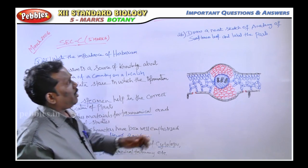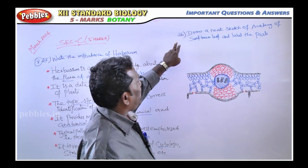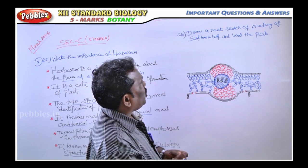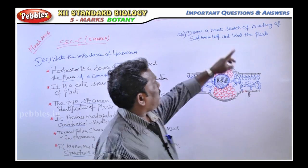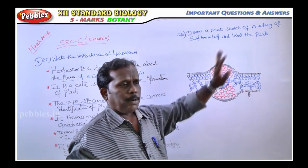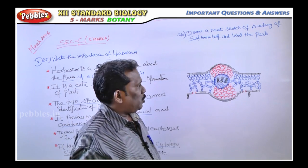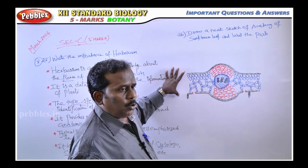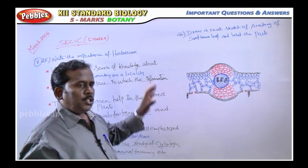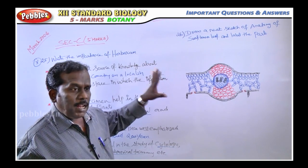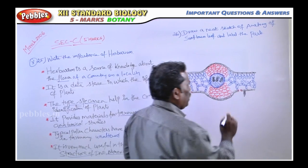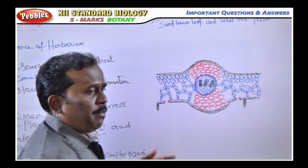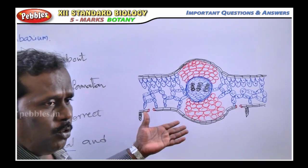Next, question number 26: draw a neat sketch of the anatomy of a sunflower leaf and label the parts. This is the diagram — observe the diagram, draw it, and label the parts. This is the anatomy of the sunflower.